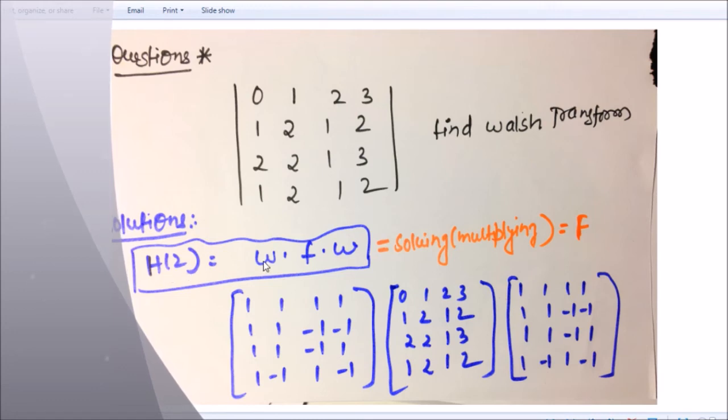So Walsh transform is of z or you can represent with f(z) also: W into f into W. So what is W? W is nothing but Walsh transform this one. Again I am saying if you want to know from where I got this, so this is your function.